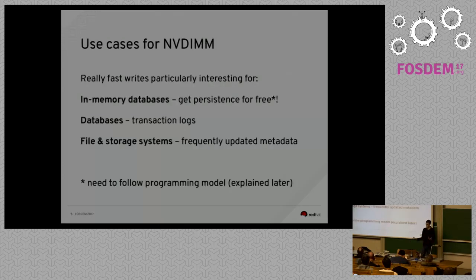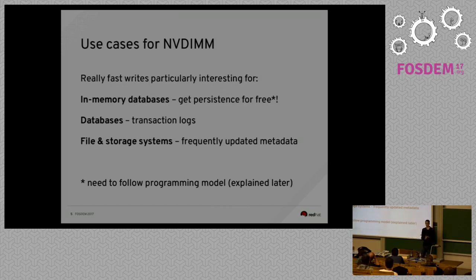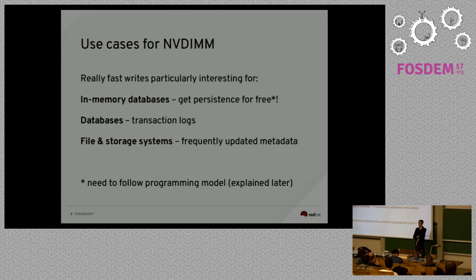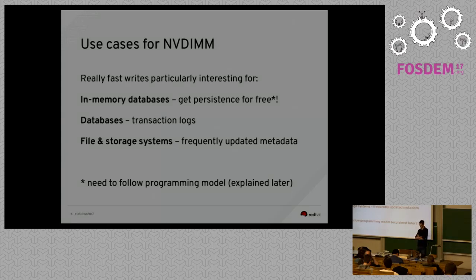So you can get fast DRAM-speed access and it's going to be persistent. Why is this a good thing? What are the use cases? In-memory databases are kind of the most obvious and immediate thing. If you have a key-value store — something like Memcached or Redis — people have added persistence modes to these databases, but usually with limitations, and the performance isn't great. A lot of users actually run things like Redis without persistence, or they don't trust it. It would be nice to get persistence for free simply by putting an NVDIMM in your machine, though there is a programming model required.